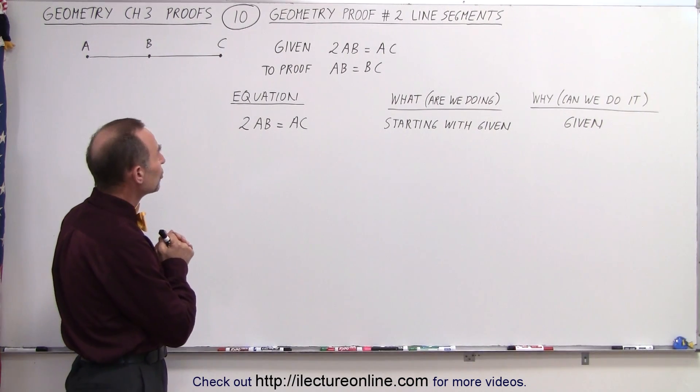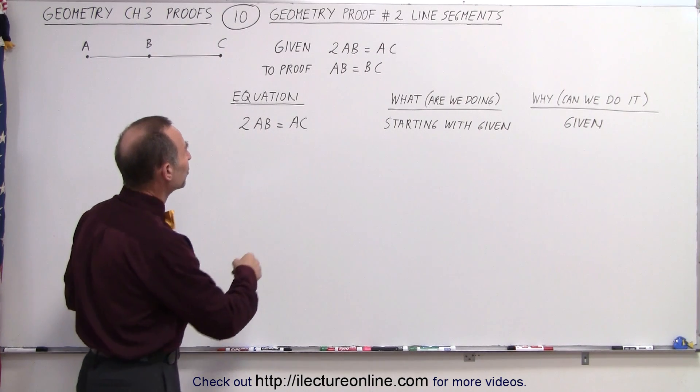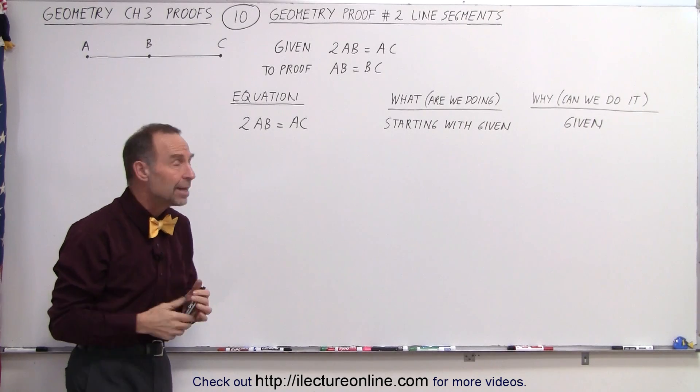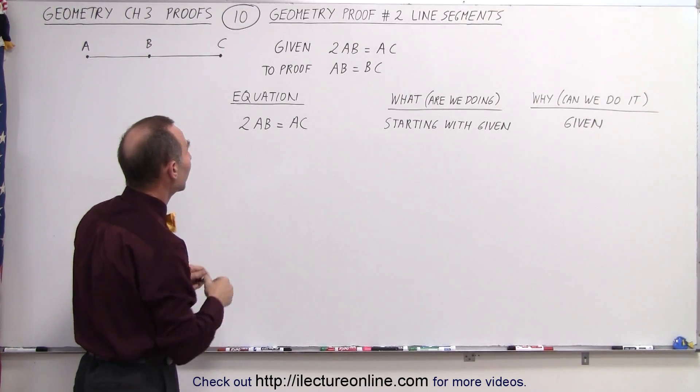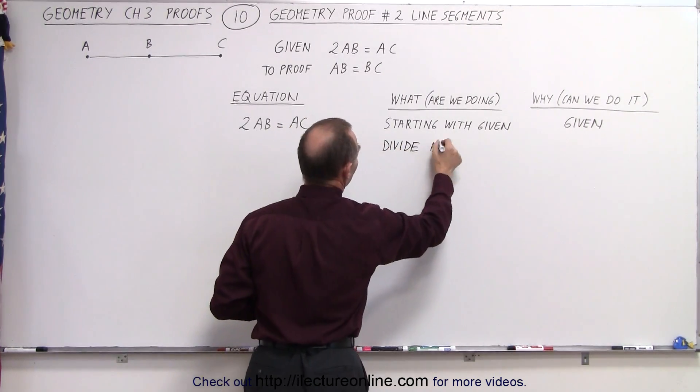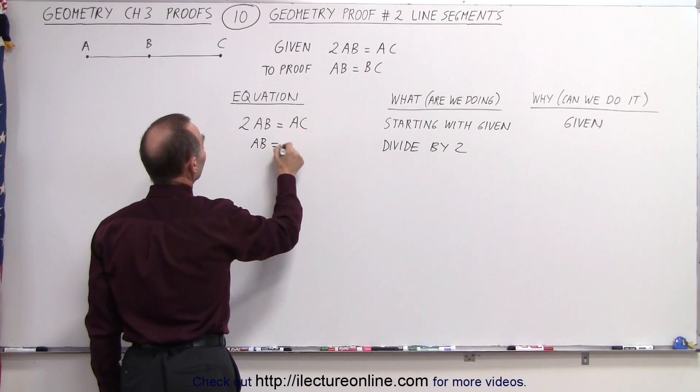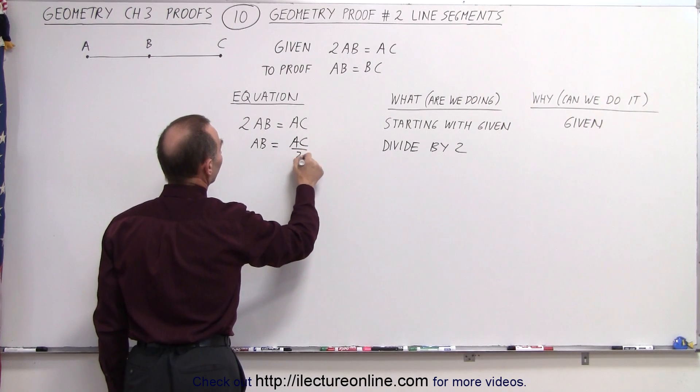Next, what we're going to do is, since we have to prove that AB equals BC, we want to somehow have an expression that just has AB. So I'm going to divide both sides by 2. And if we do that, we end up with AB is equal to AC divided by 2.